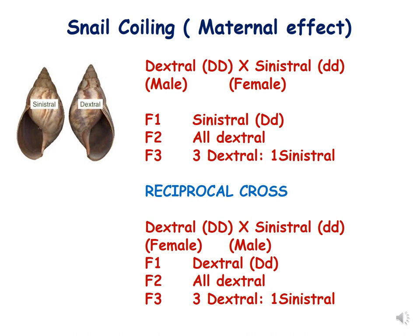In the reciprocal cross, when the sexes are interchanged — dextral as female and sinistral as male — F1 resembles dextral. This is opposite to the first cross because changing the sexes changes the F1 result. In the second cross, F2 are all dextral and F3 show a three dextral to one sinistral ratio.